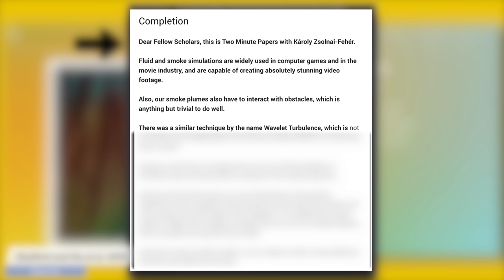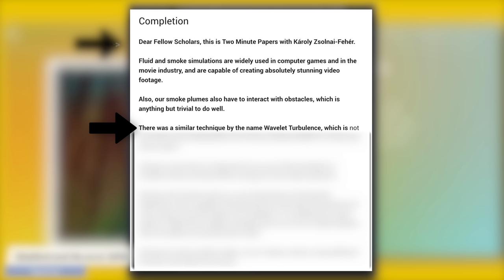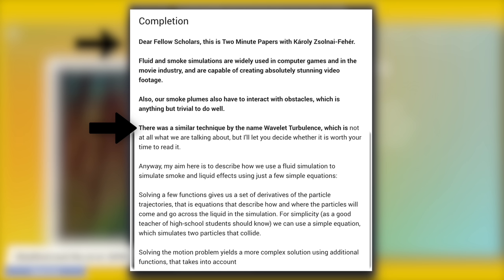Something that I wanted to try since the inception of GPT-2 was to feed it a snippet of something I said about wavelet turbulence, which is one of the best papers ever written, and have the AI finish it. I tried to frame it as an exam question, and was not disappointed by the results. The text is: 'there was a similar technique by the name wavelet turbulence, which is…' — and look what it did. It replied: 'there was a similar technique by the name wavelet turbulence, which is not at all what we are talking about. But I'll let you decide whether it is worth your time to read it.' Wow. GPT-2 has been caught cheating red-handed. I love it.